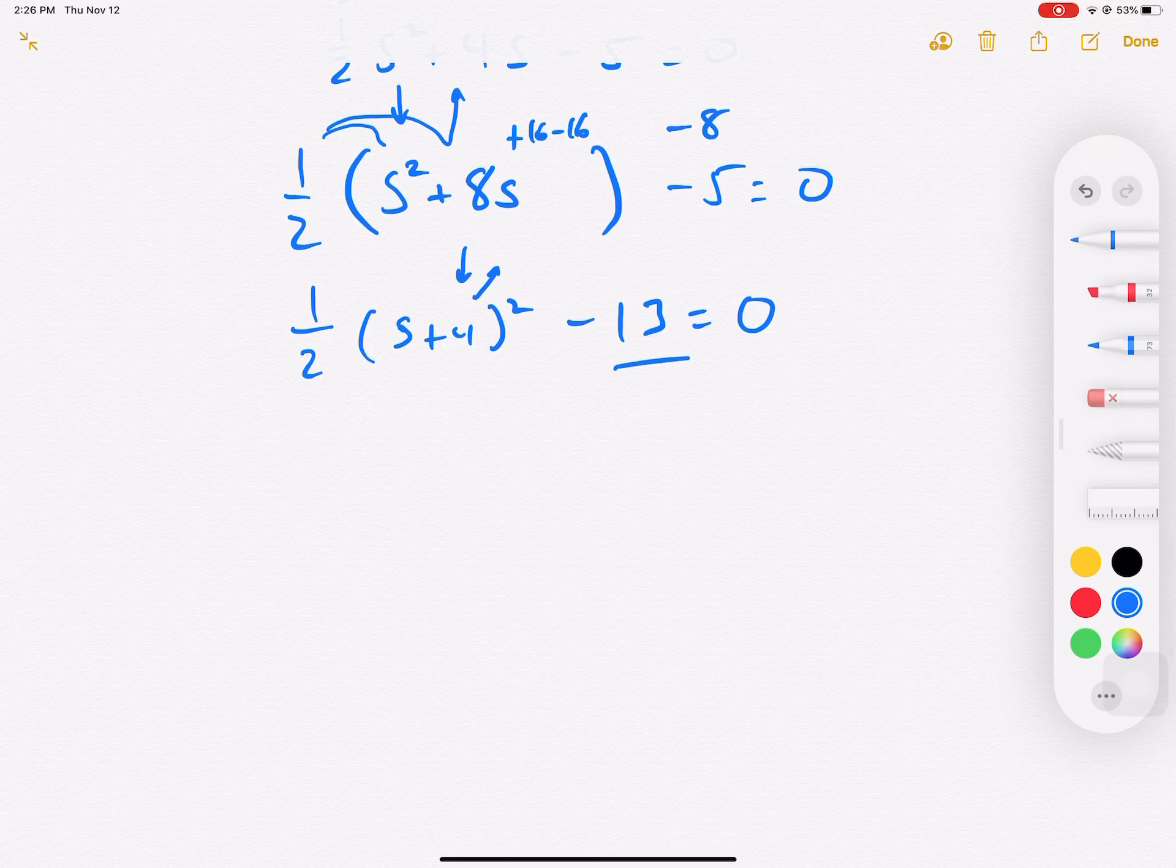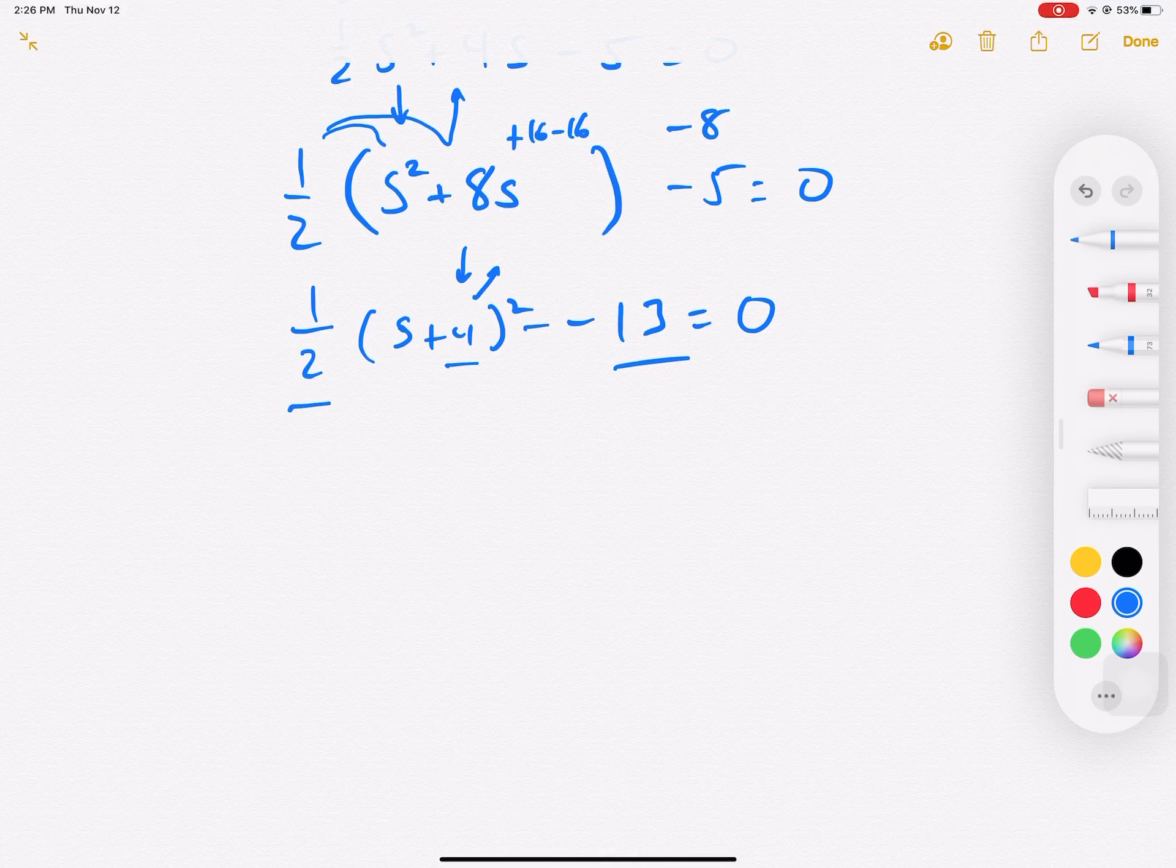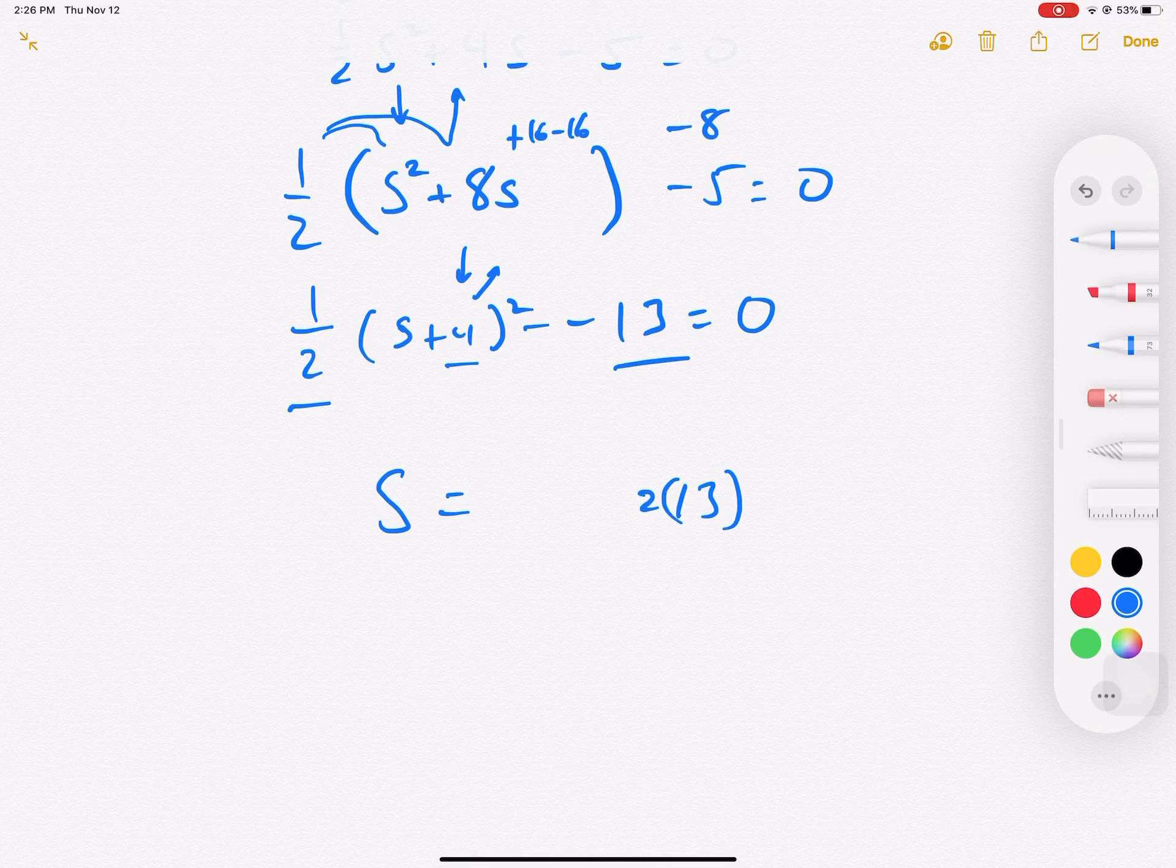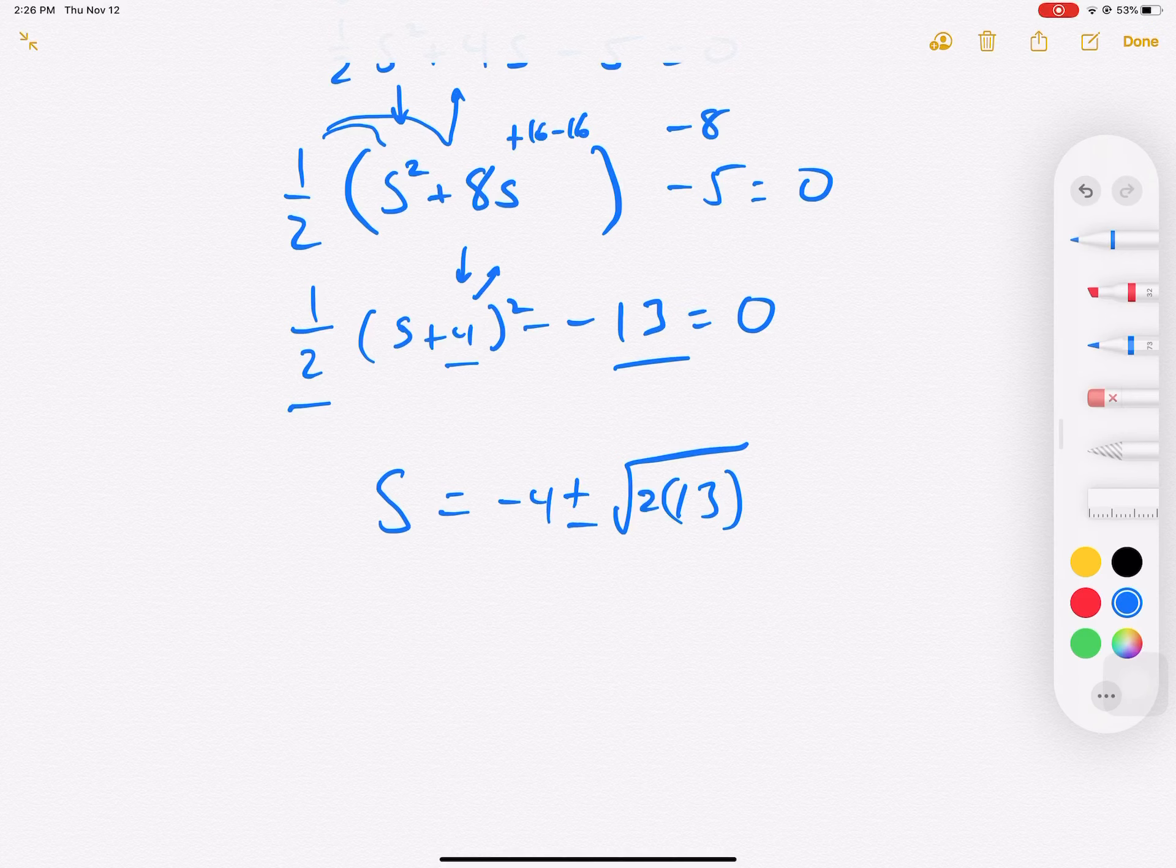Now we can move 13, squared 4, and 1 half all over in one step - please try that. By 13, then we're going to get rid of the 1 half, so we're going to multiply this by 2. Then we're going to get rid of the square, so we take the square root of that, and then we're going to minus 4. Don't forget the plus or minus. Negative 4 plus or minus the square root of 26.